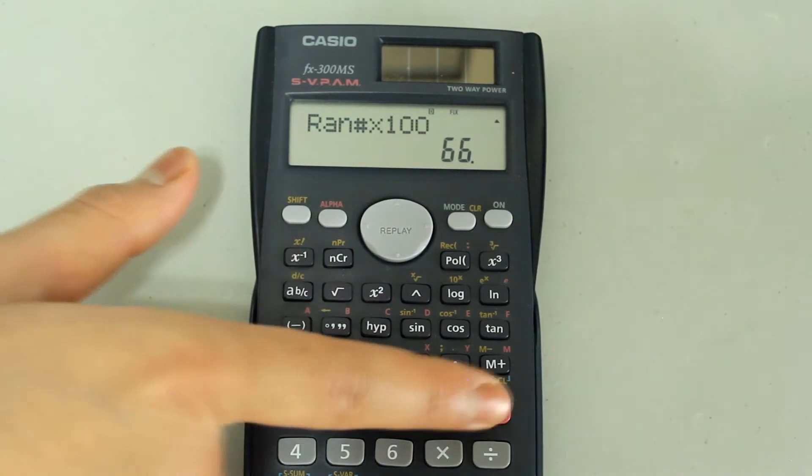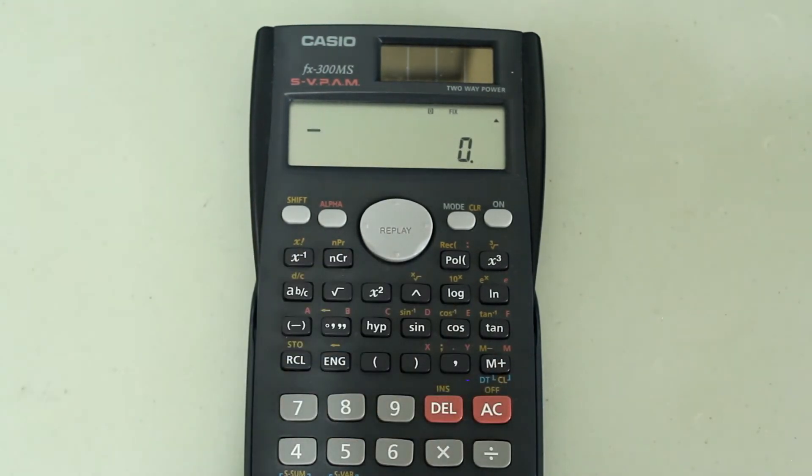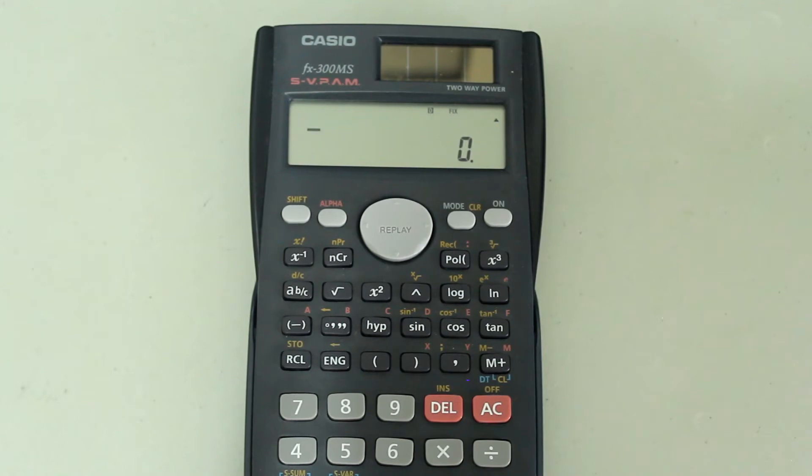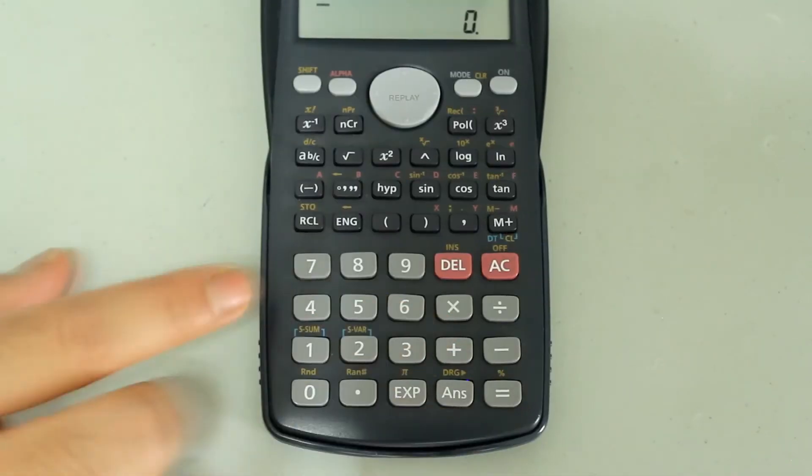Let's clear the screen. If you want to generate a number between, let's say, 40 and 100 instead of 0 and 100, you can do that. Type in the lower value, which is 40, on the number pad.